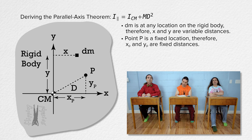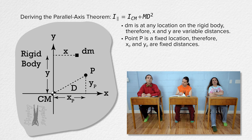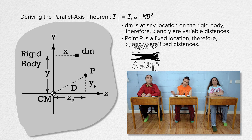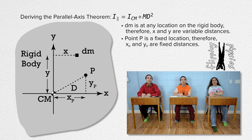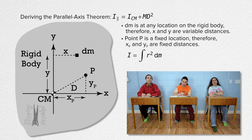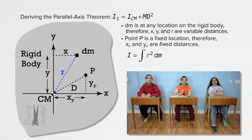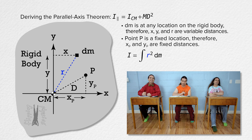Now that we have the setup — what is the general equation for the moment of inertia of a rigid body? The rotational inertia of a rigid body equals the integral with respect to mass of r squared, where r is the distance from the axis of rotation to each infinitesimally small piece of the rigid body, dm.